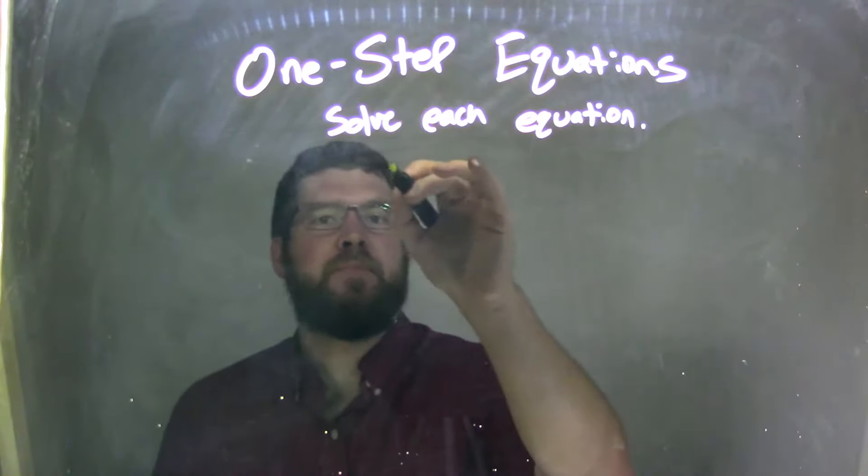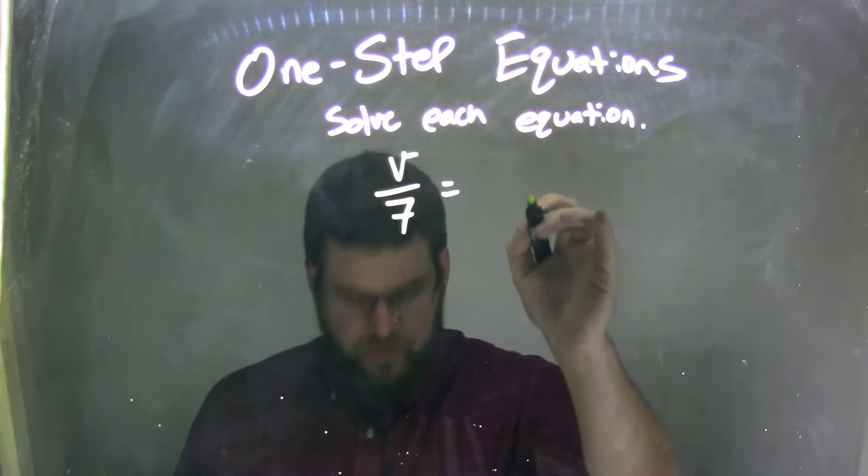So if I was given this equation: V over 7 equals 8.